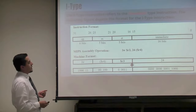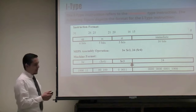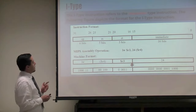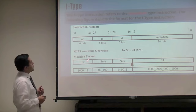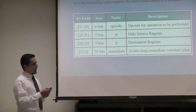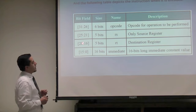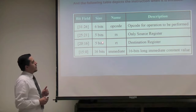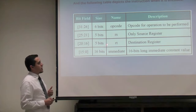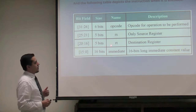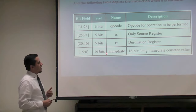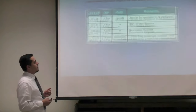Here is the I type. I stands for immediate type instructions. Again, 6 bits for an opcode. There is only one register source RS and one destination RT, each 5 bits. And we have 16 bits for an immediate value.